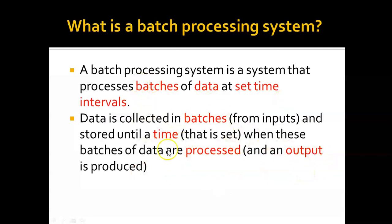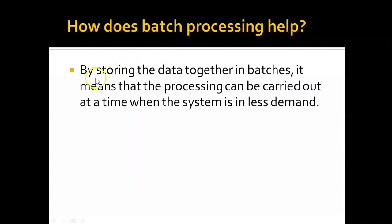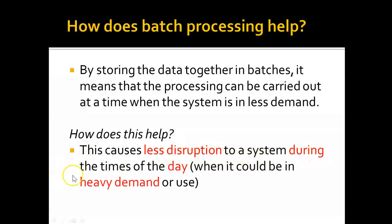The most common example of batch processing is a payroll system. How does batch processing help? By storing data together in batches, processing can be carried out at a time when the system is in less demand. This causes less disruption during times of heavy use. For example, payroll only has to be calculated at the end of the month, and you can run it during the night when no one is using the system, because the computer can do it all itself.